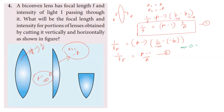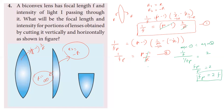Dividing equation 1 by equation 2, the mu minus 1 and 1 by R terms cancel. This gives fp divided by f equals 2, so the focal length of the plane convex lens equals twice the focal length of the bi-convex lens. This result is for the vertically cut portion.